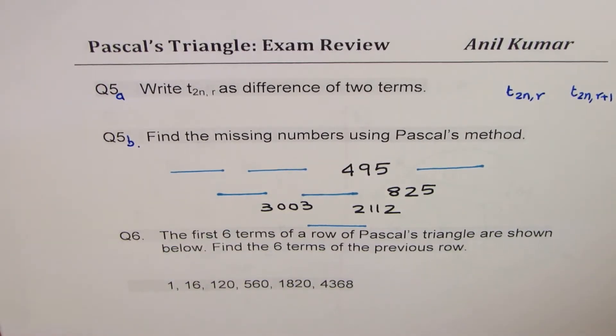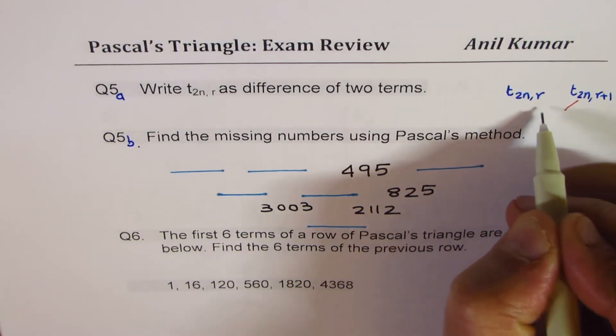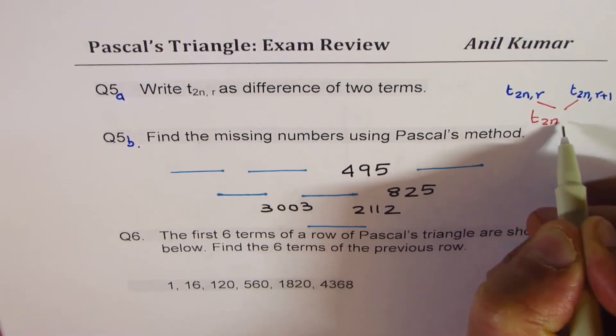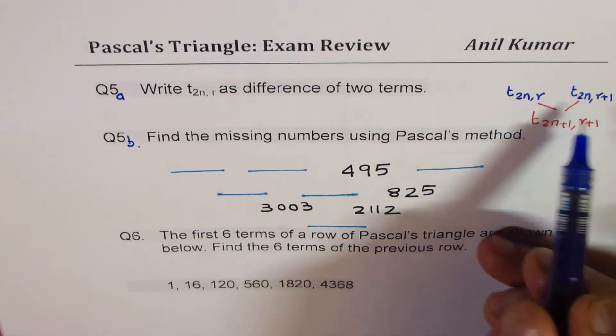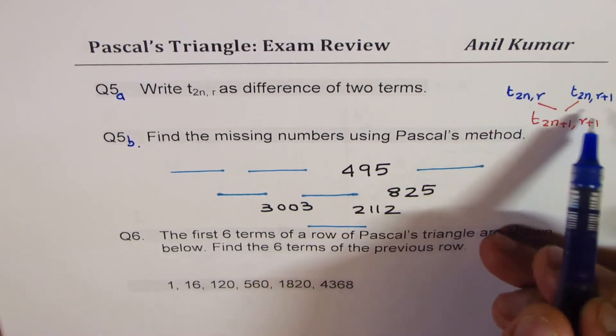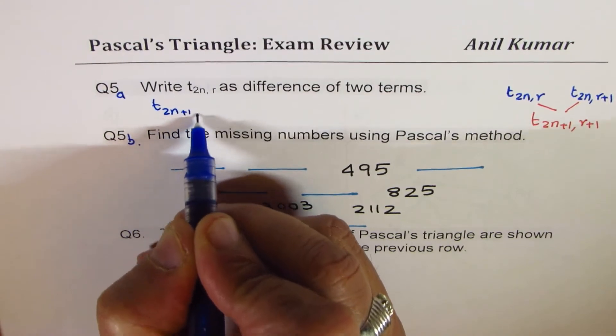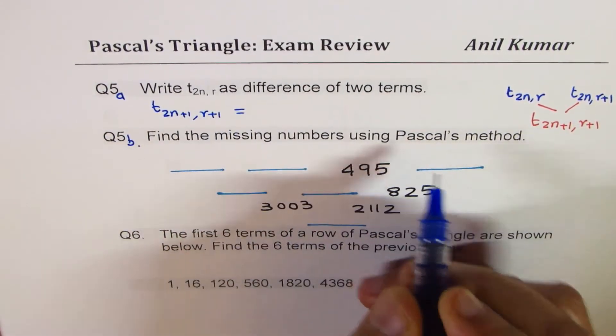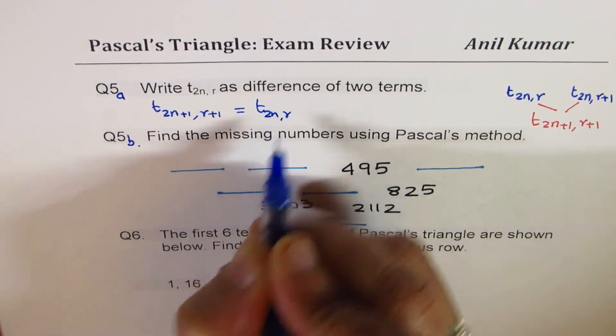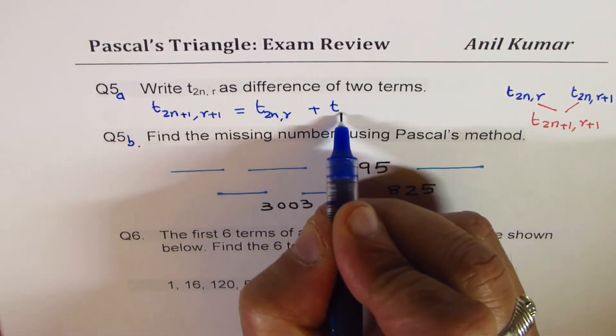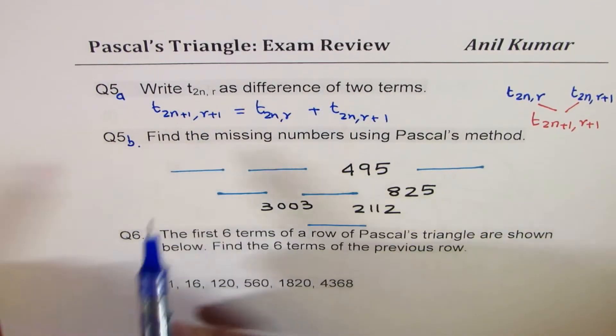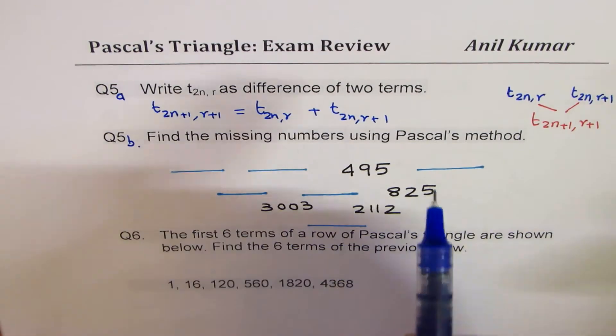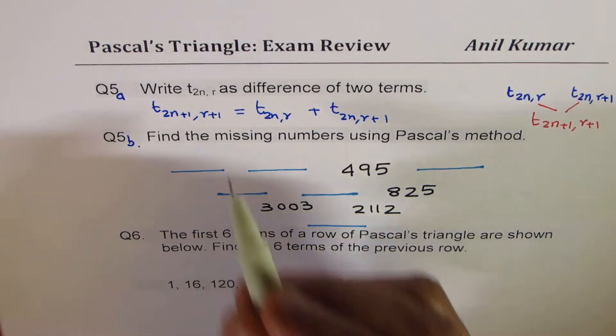And if you add them, what will you get? The next number in the next row will be what? So if you add them here, you get t2n plus 1r plus 1. You get an idea. We can actually rearrange and then write as a difference. So from here, we know that t2n plus 1r plus 1 is equal to some of these two, which is t2nr plus t2nr plus 1.